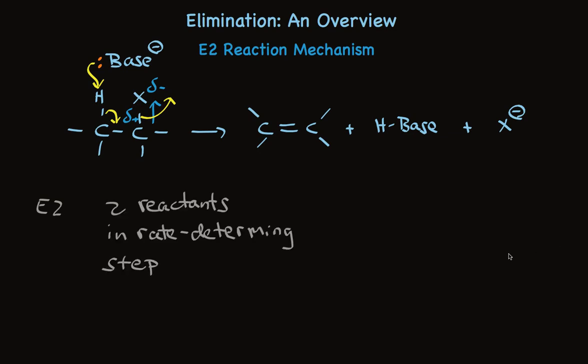It's like an SN2 reaction, isn't it? Single step, two reactants. All bond making and bond breaking happens simultaneously. This must be a strong base. And the leaving group is usually halide, chloride, bromide or iodide.